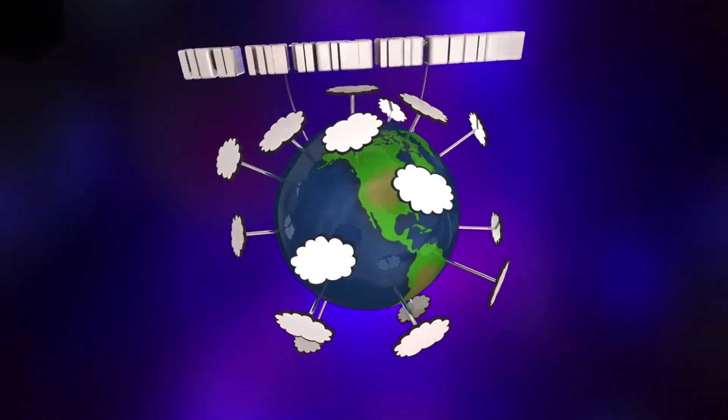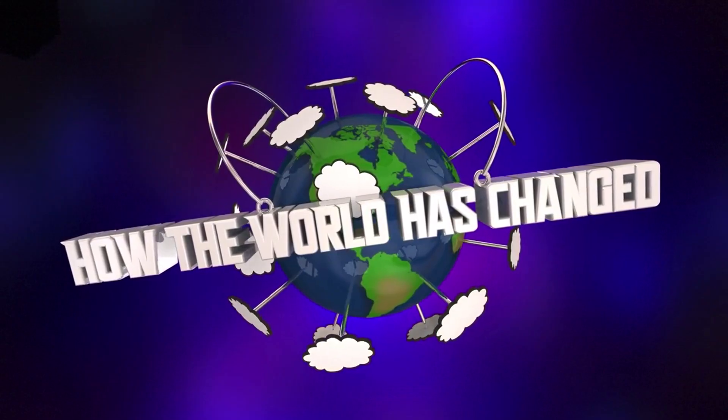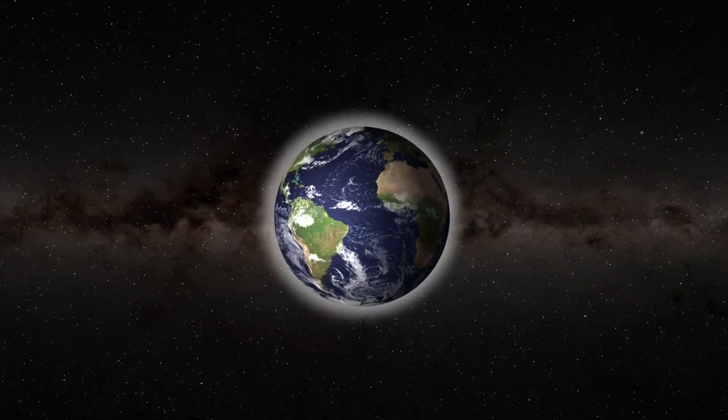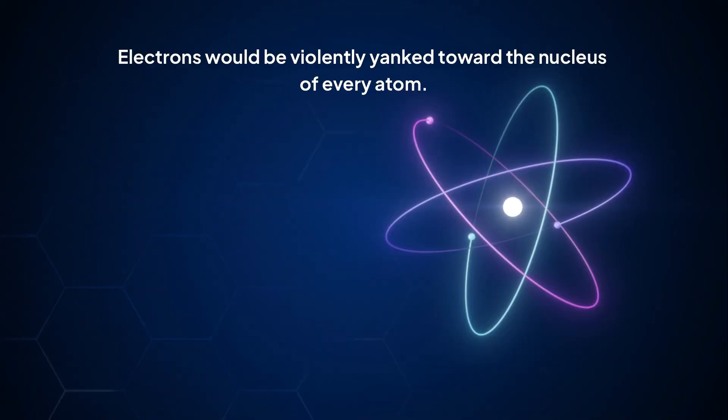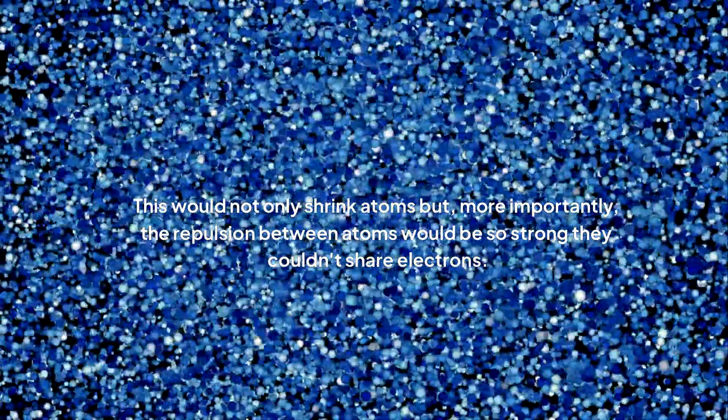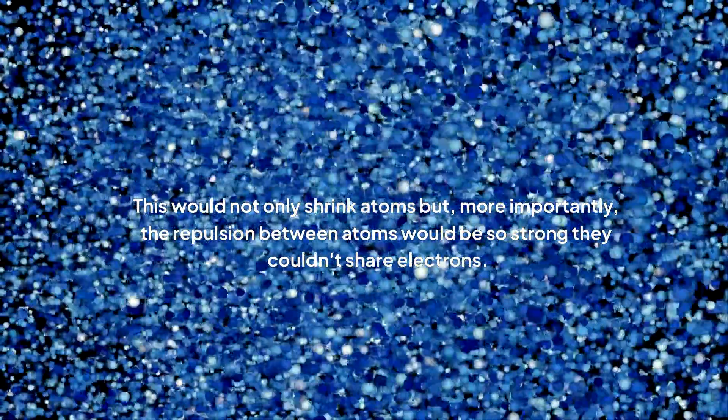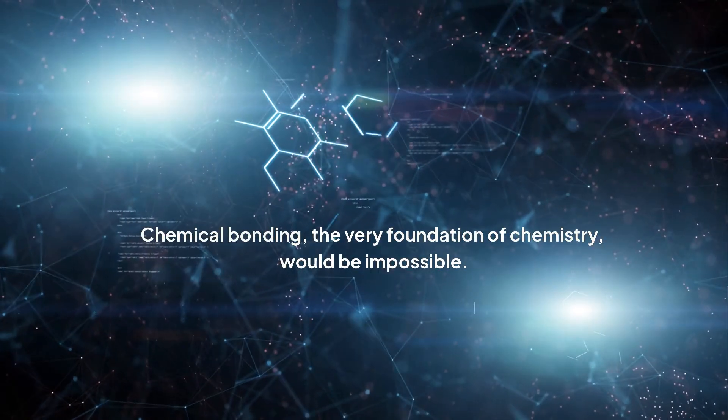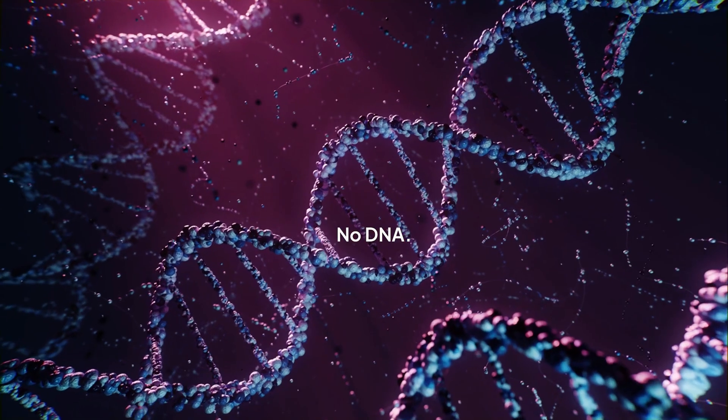Imagine a universe where alpha is larger, say 1/100th instead of 1/137th. The electromagnetic force would be stronger. The results? Catastrophic. Electrons would be violently yanked toward the nucleus of every atom. This would not only shrink atoms but, more importantly, the repulsion between atoms would be so strong they couldn't share electrons. Chemical bonding, the very foundation of chemistry, would be impossible. No water. No carbon. No DNA. No life.